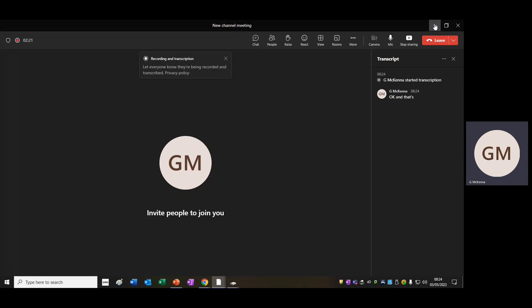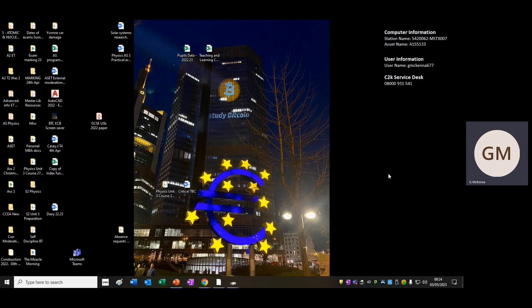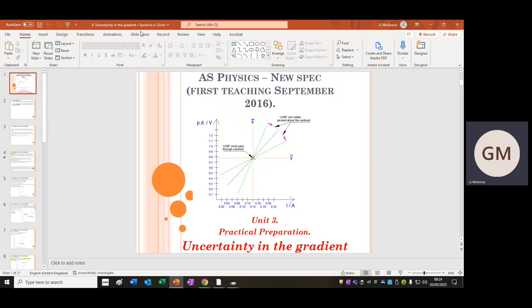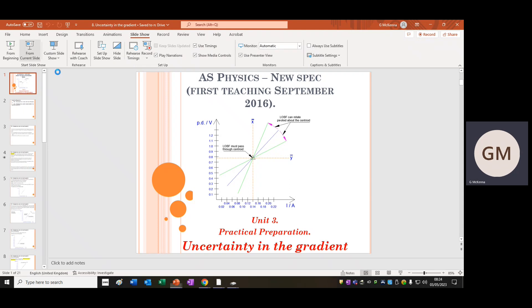Okay, in this next video we're going to take a look at how to work out the uncertainty of a gradient of a graph. Now, we're going to split this lesson into two parts.